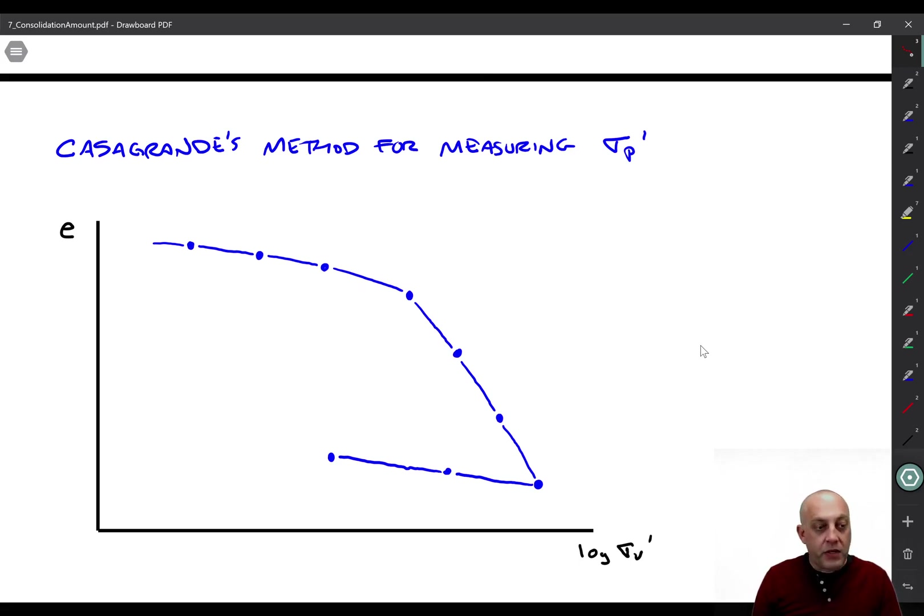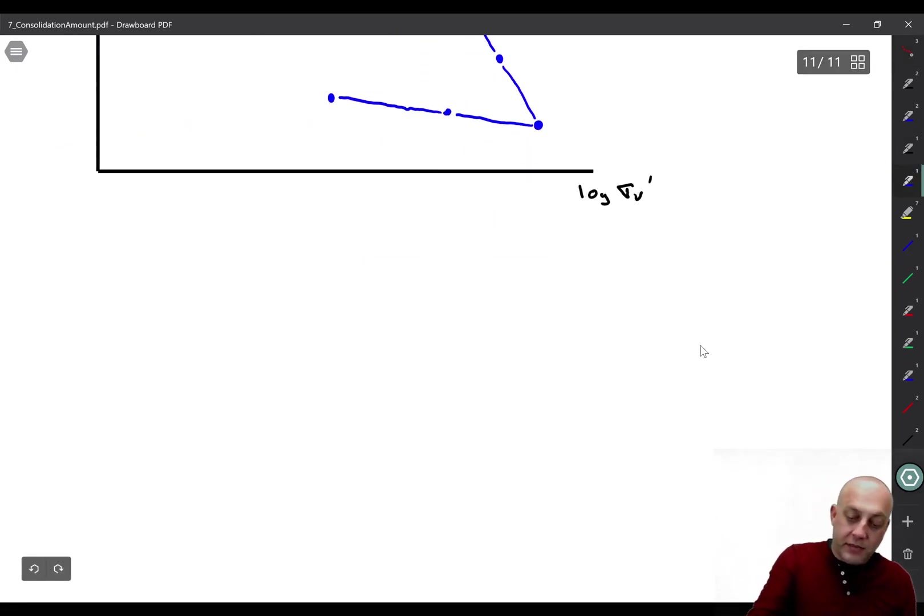So what we're going to do, that's already step one of Casa Grande's procedure. So let's write those steps down here. Step one. Draw a consolidation curve.